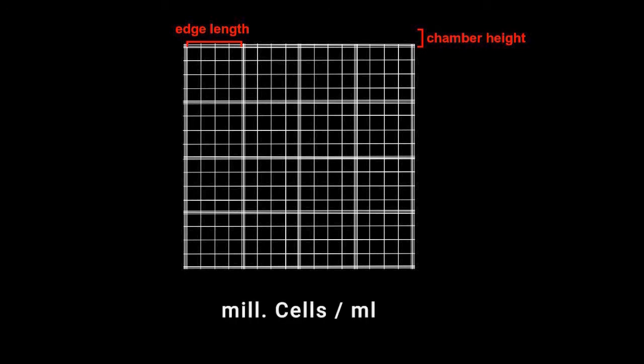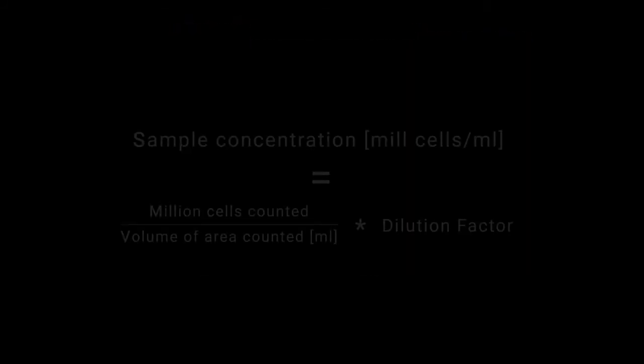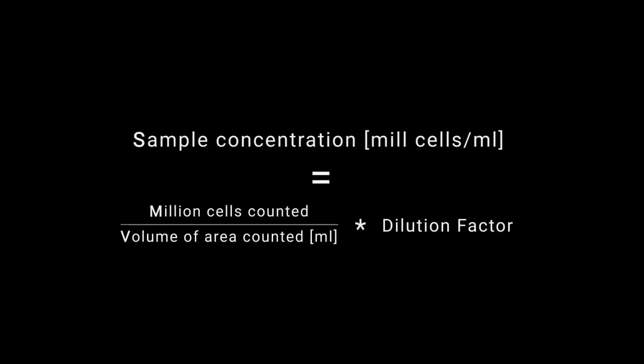As this is how concentration values are typically used for yeast counting. Your hemocytometer manual should include information about your exact edge length as well as the chamber height. Many manufacturers also include some sample calculations. Finally make sure you also consider the dilution factor. If you diluted your sample before loading it you have to correct by this factor.